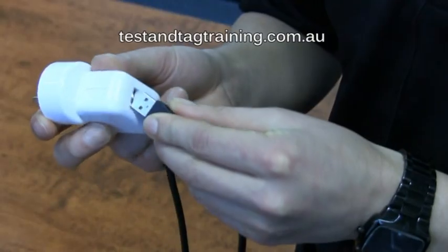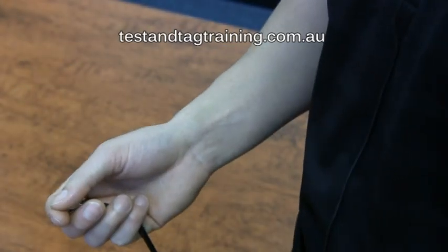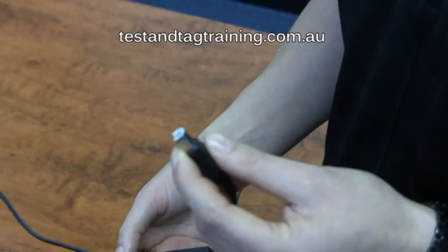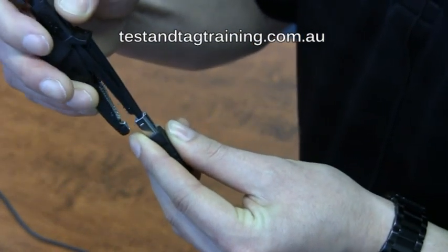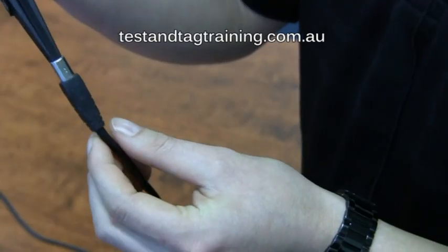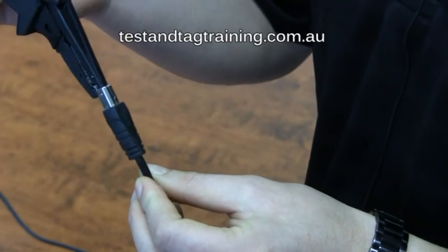From here, you plug it into the charger and then into the portable appliance tester. With the USB B side, we place the return lead inside, making contact with both positive and negative. And we'll be conducting an insulation resistance test of 500 volts DC through the device.